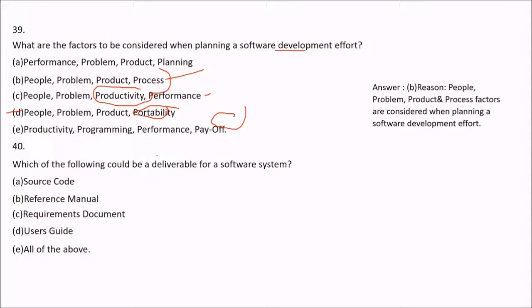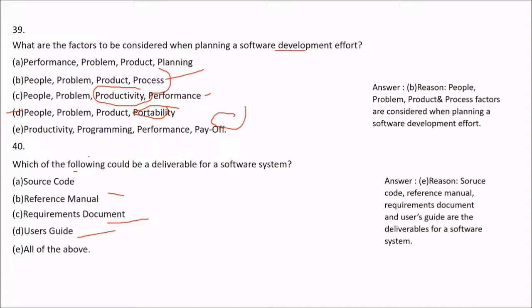Question 40: Which of the following could be a deliverable for a software system? Source code, reference manual, requirements document, and user guide — all of these are deliverable items.